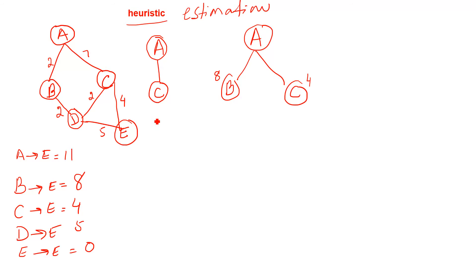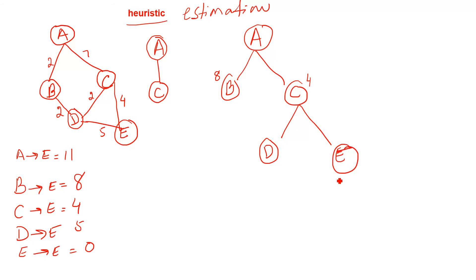Now we expand C. From C we have two routes: one going to D and the other going to E, which is our ending point. The heuristic cost of D is 5. The heuristic cost of E is 0, because from E to E the distance is 0 — the ending point is always 0.